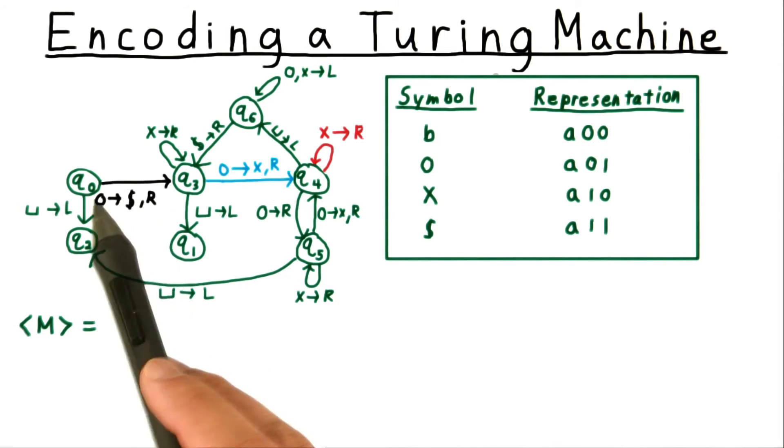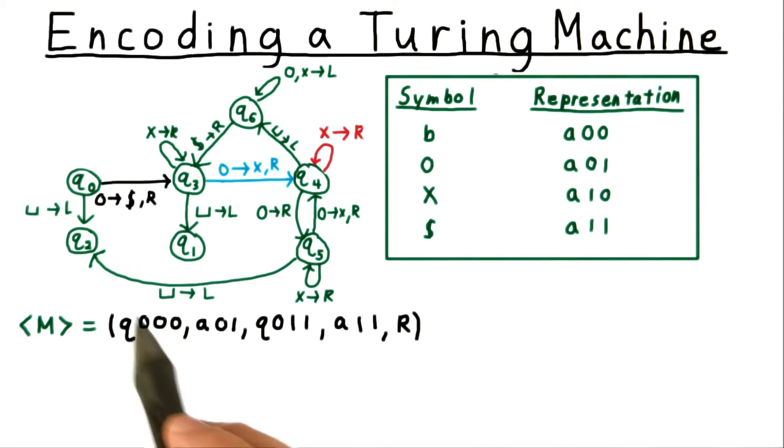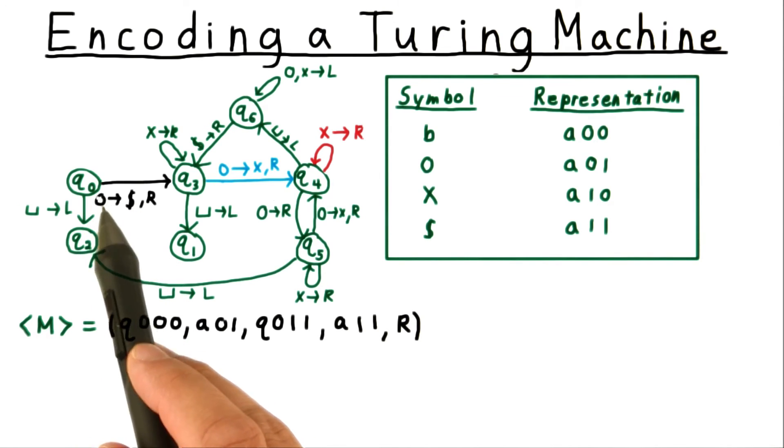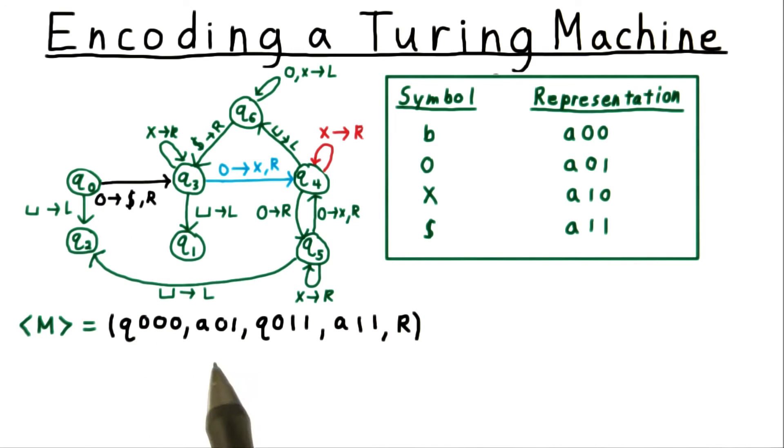We'll start by considering this edge here. We're going from state 0, so I'll write that this way. We see the symbol 0, so I'll write the encoding for that, like so.